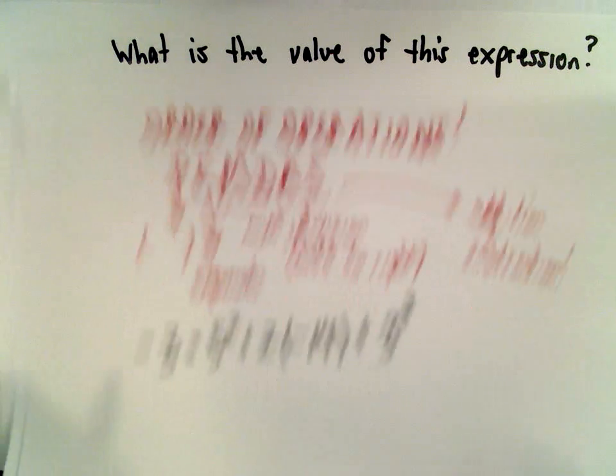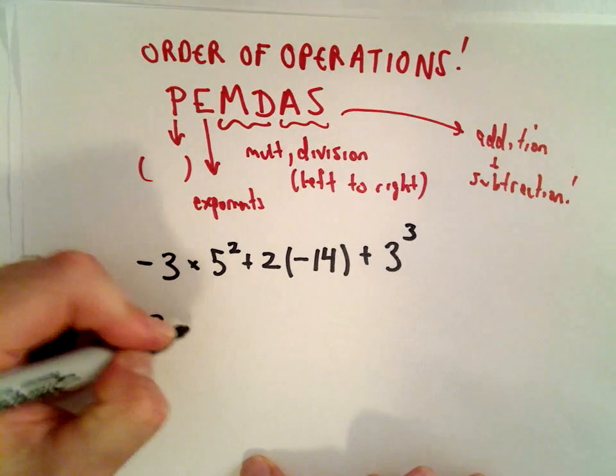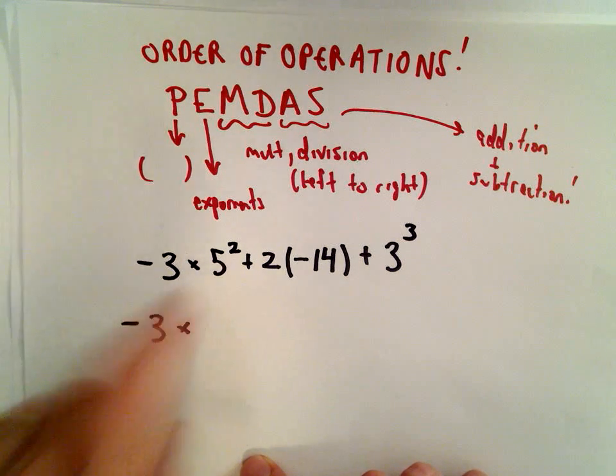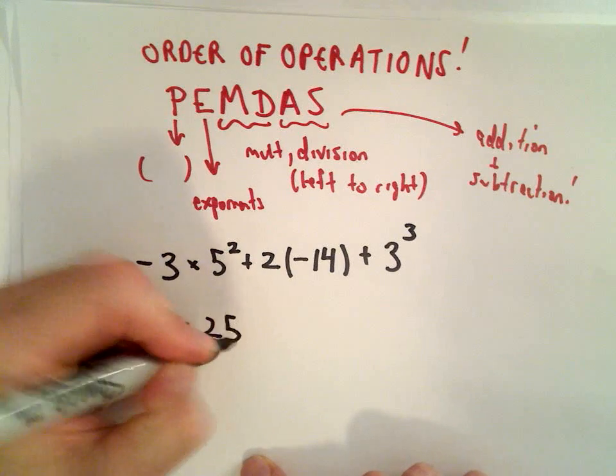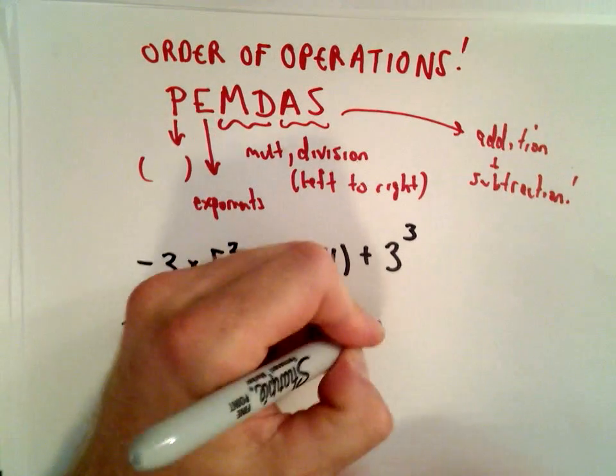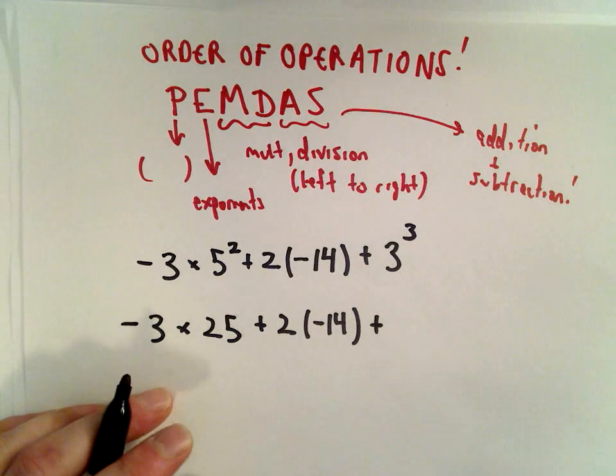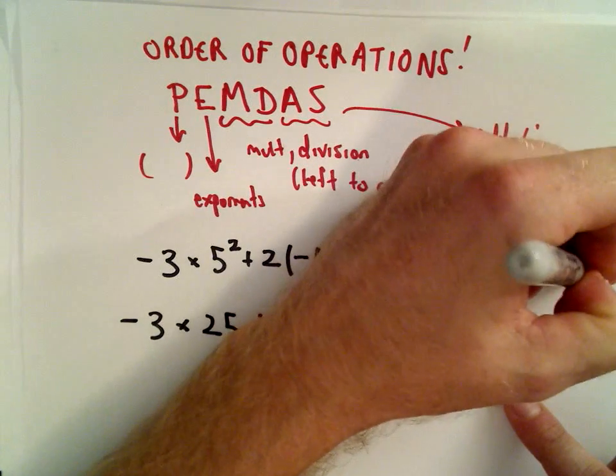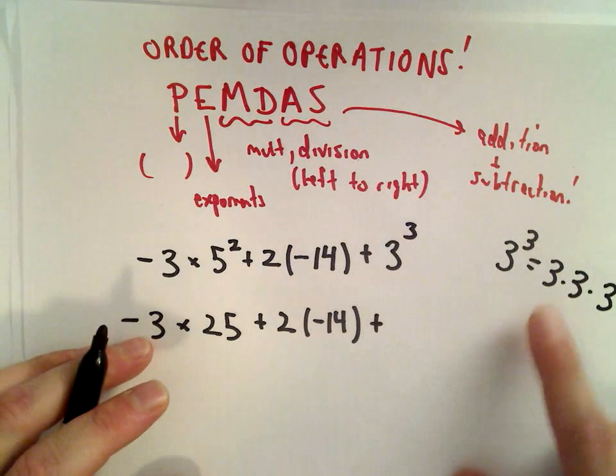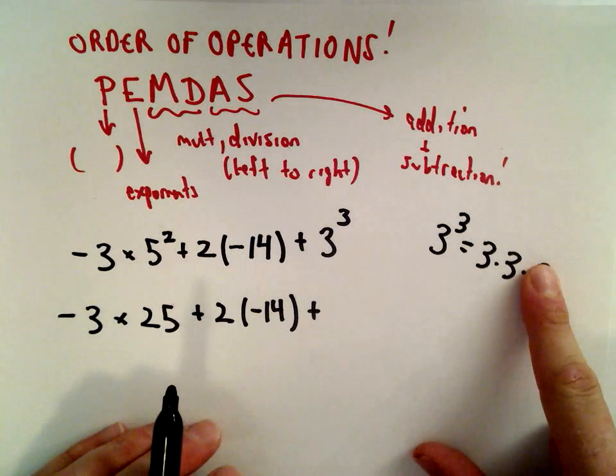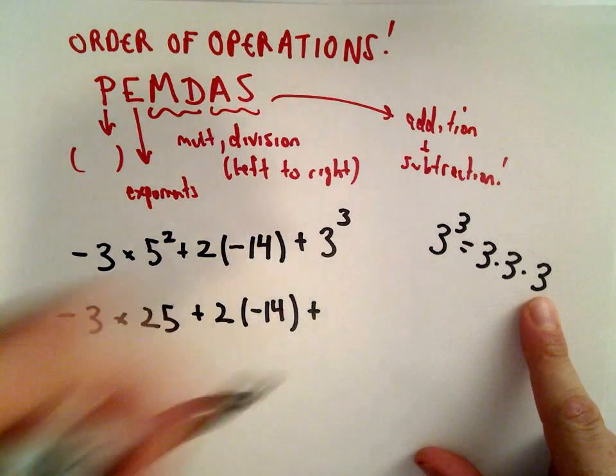Next, it says do exponents. We have negative 3 multiplied by 5 squared. Well, that's 5 times 5, which is 25. 3 to the third, now be careful, because 3 to the third means 3 multiplied by 3 multiplied by 3. 3 multiplied by 3 is 9. If you multiply that by another 3, you're going to get 27.